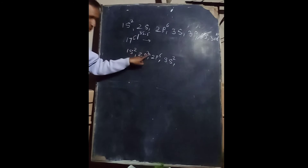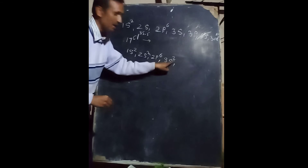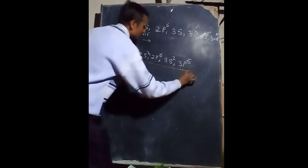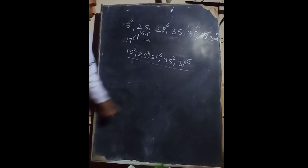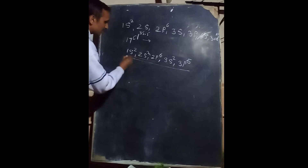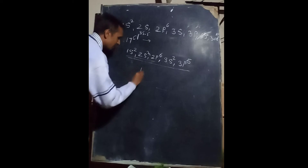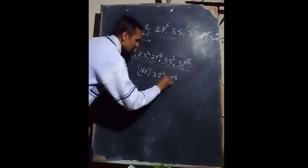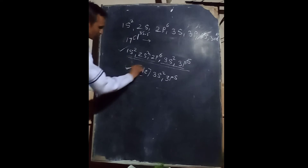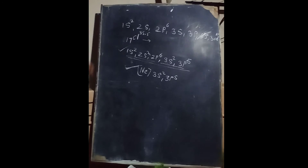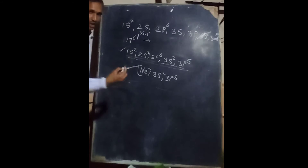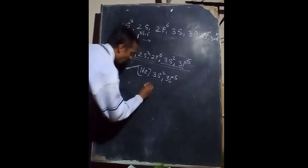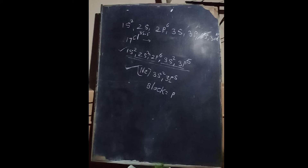Counting the electrons: 2 plus 2 is 4, plus 6 is 10, plus 2 is 12. We want 17, so in 3p we write 5. So the electronic configuration of chlorine is 1s², 2s², 2p⁶, 3s², 3p⁵. In modern notation, since the first 10 electrons equal neon, we write it as [Ne] 3s², 3p⁵. Now, the last electron goes into the p sub-orbit, so the block is the p block.